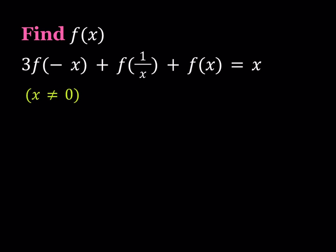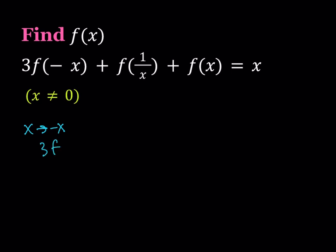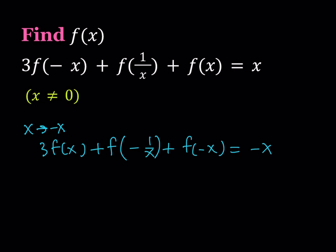I'm going to be using substitution — that's one of my favorite methods. First, I'm going to replace x with negative x, and if I do that I'm getting: 3 times f of x plus f of negative 1 over x plus f of negative x equals negative x. So that's going to be my second equation, and the first one is the original.